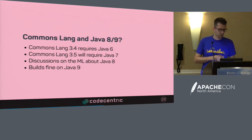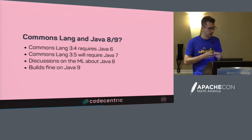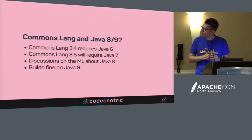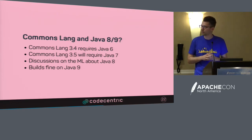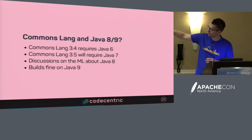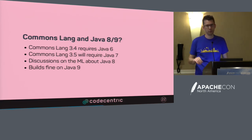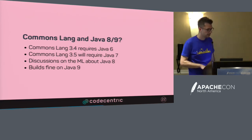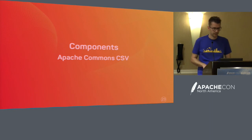Regarding Commons Lang and Java 8 and 9: Commons Lang 3.4 requires Java 6, and we're working on 3.5 which will require Java 7. Switching to Java 8 is a topic for Commons Lang 4.0. Regarding Java 9, the code builds and runs on Java 9 because we're not doing any magic stuff that's restricted in Java 9.